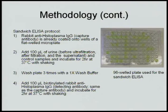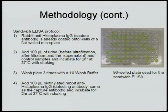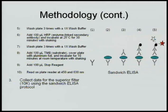After incubating, we wash the plate three times with a wash buffer and add 100 microliters of the detecting antibody, which is the same as the capture antibody. Again, we incubate for two hours at 37 degrees Celsius. Here's a picture of a 96-well plate that we use for this ELISA. We then wash the plate again three times with a wash buffer, add 100 microliters of enzyme-linked secondary antibody, and incubate at 25 degrees Celsius for 30 minutes. This enzyme-linked secondary antibody binds to the detecting antibody.